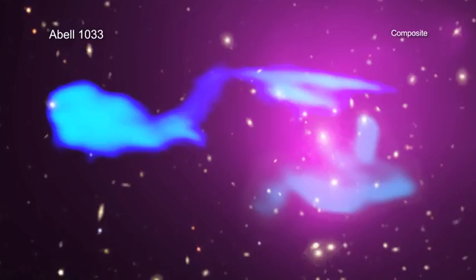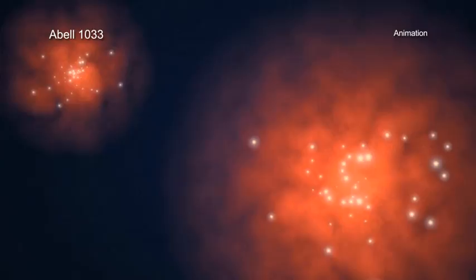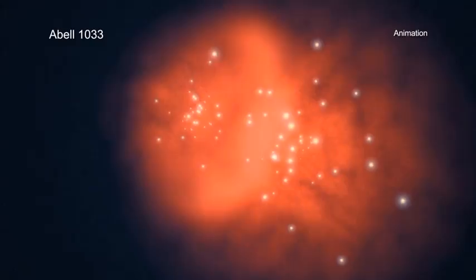The galaxy cluster is located about 1.6 billion light-years from Earth. Using X-ray and radio data, scientists have determined that ABEL 1033 is actually two galaxy clusters in the process of colliding.